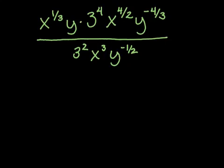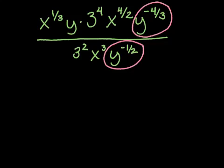There are a lot of different ways you can tackle this problem — you don't have to do it exactly the way I'm doing it. What I want to do next is deal with the negative exponents, because in our final simplified answer we do not want any negative exponents anywhere. In the bottom we have y to the negative 1/2, and in the top we have y to the negative 4/3. I want to convert both of these to get rid of the negative exponents.